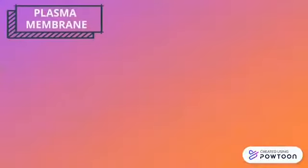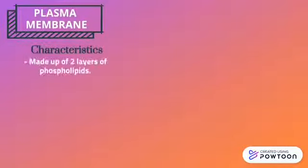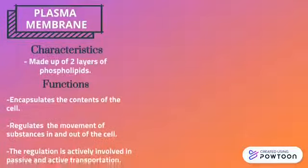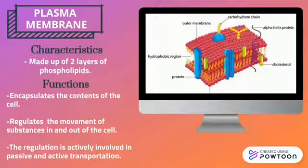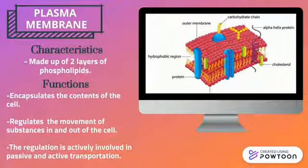Plasma membrane is made up of two layers of phospholipids, known as phospholipid bilayers. The plasma membrane encapsulates the content of the cell and regulates the movement of substances in and out of the cell.